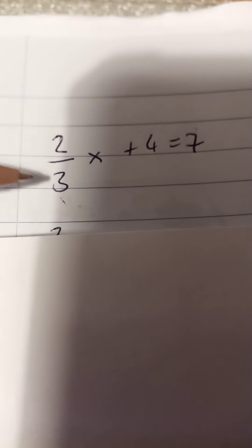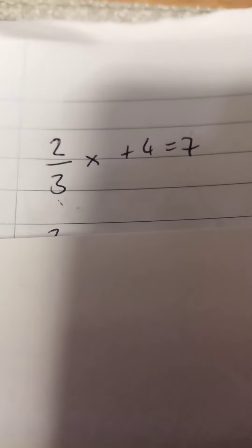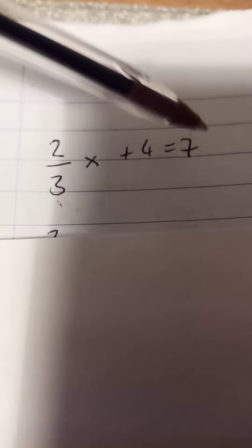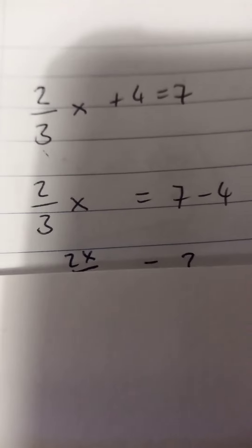Solving algebraic expressions with some terms as fractions and some as not. I think the easiest thing to do here is to bring the 4 across and it becomes a minus 4, and then we get 2/3 of x is equal to 7 minus 4.